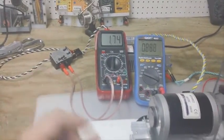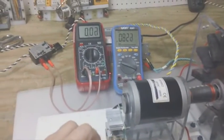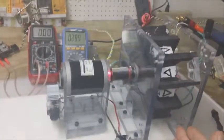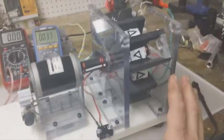One point eight, one point seven. So almost an amp less. So the core is actually using an amp of power to create the magnetic fields in the rotor.